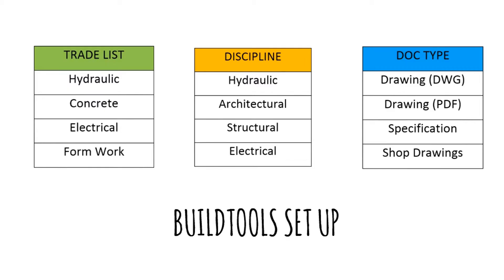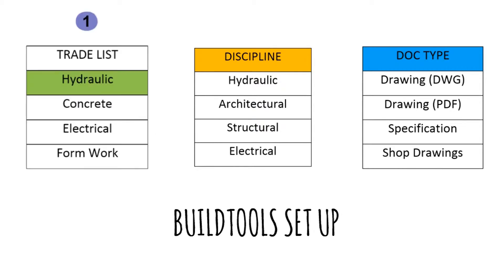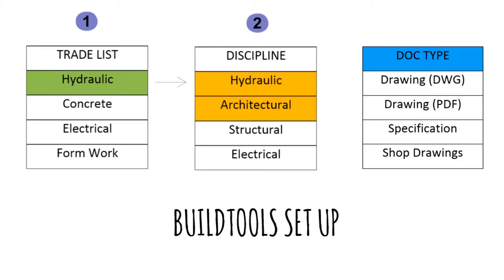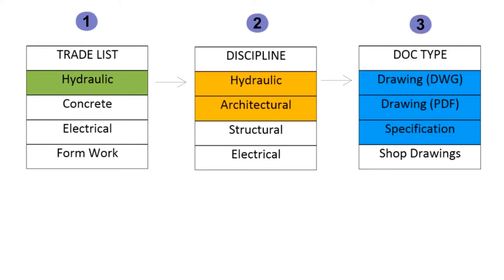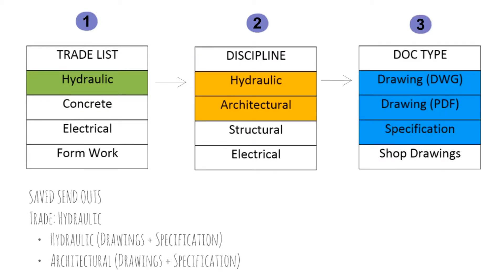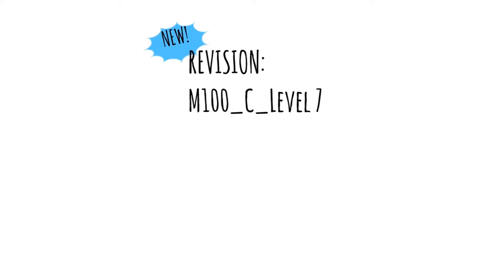Build Tools setup involves selecting the trades, its disciplines, and the various document types. These saved send-outs simplify the document selection process and ensure each trade receives the right files. This means new drawings entered into Build Tools will be automatically sent out to the relevant parties.